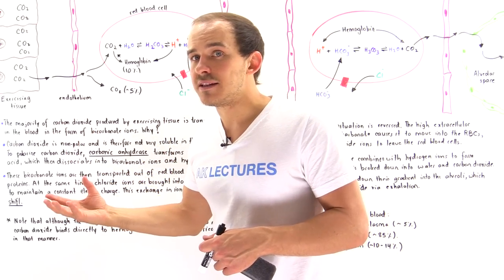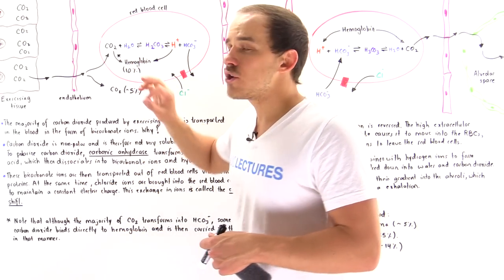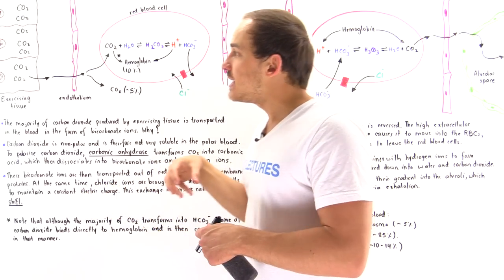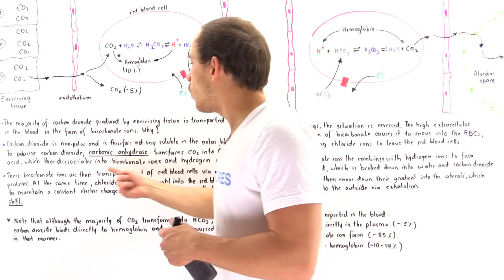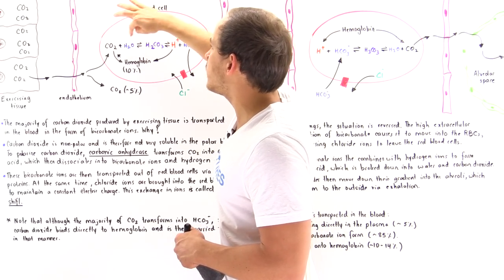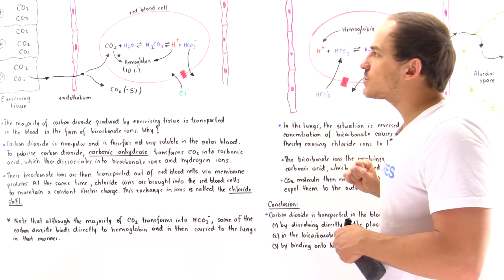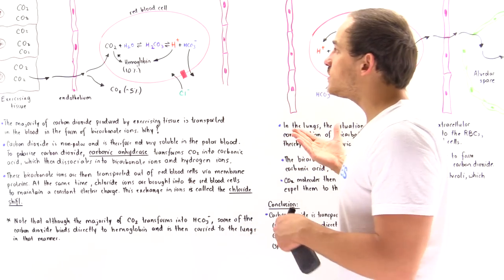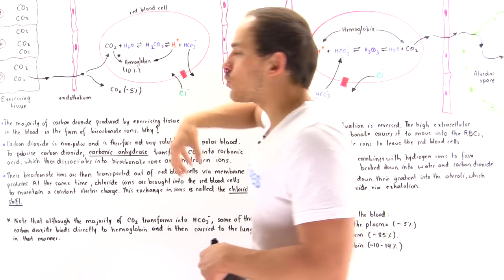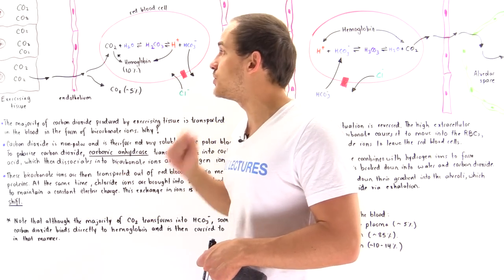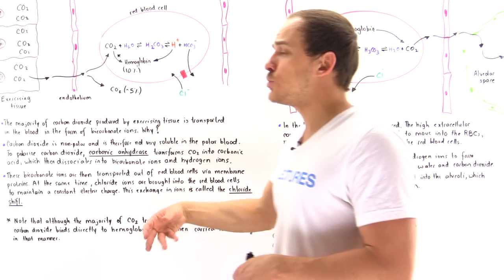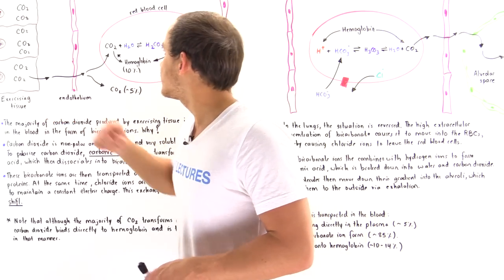With 5% dissolved in plasma and 10% bound to hemoglobin, the remaining 85% of the carbon dioxide combines with water. The enzyme carbonic anhydrase catalyzes the conversion of CO2 and H2O into carbonic acid. Carbonic acid then dissociates into H+ ions and bicarbonate ions. The H+ ions contribute to the Bohr effect by binding onto special regions of hemoglobin, further decreasing its affinity for oxygen and allowing it to unload even more oxygen to the exercising tissue.